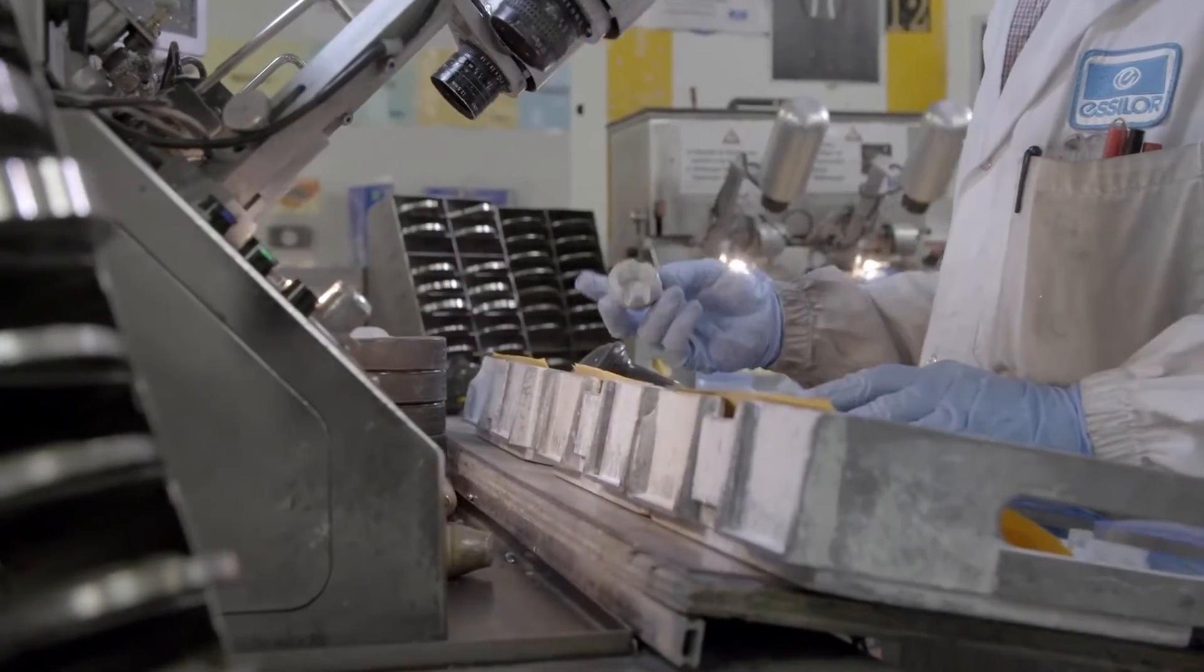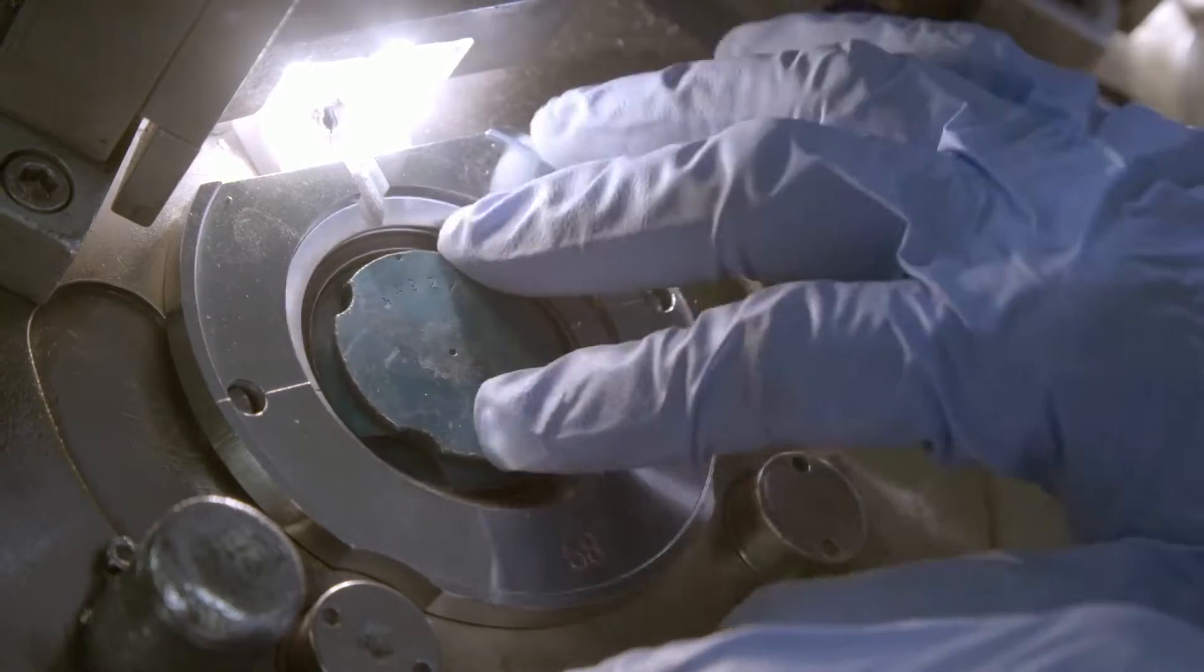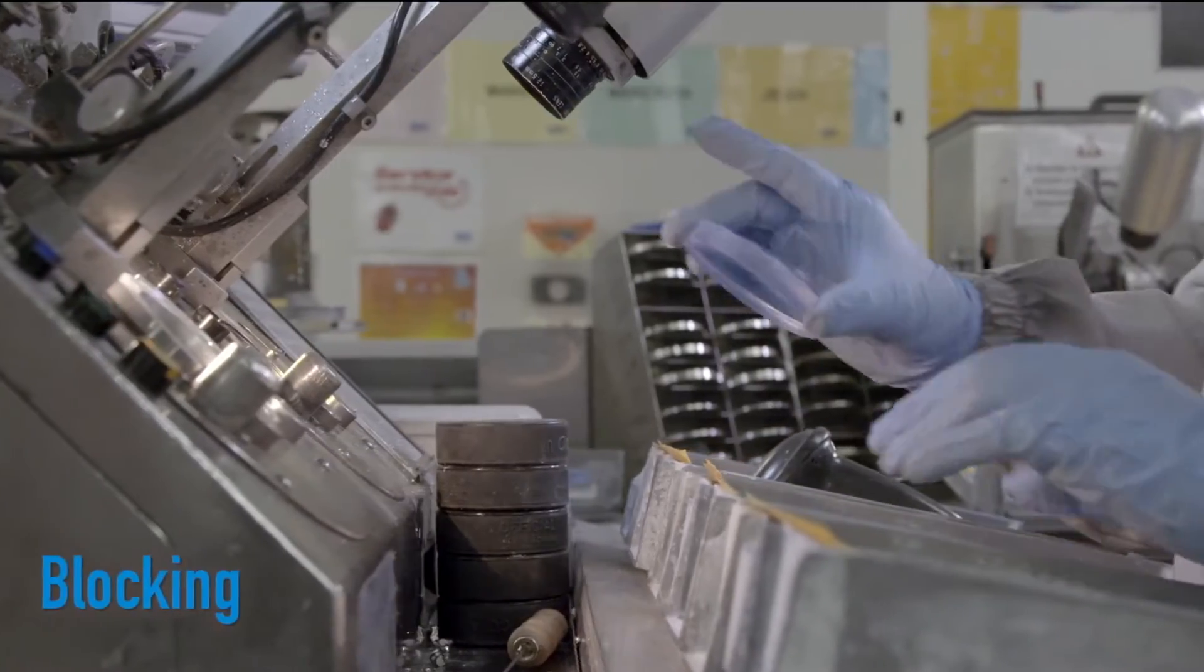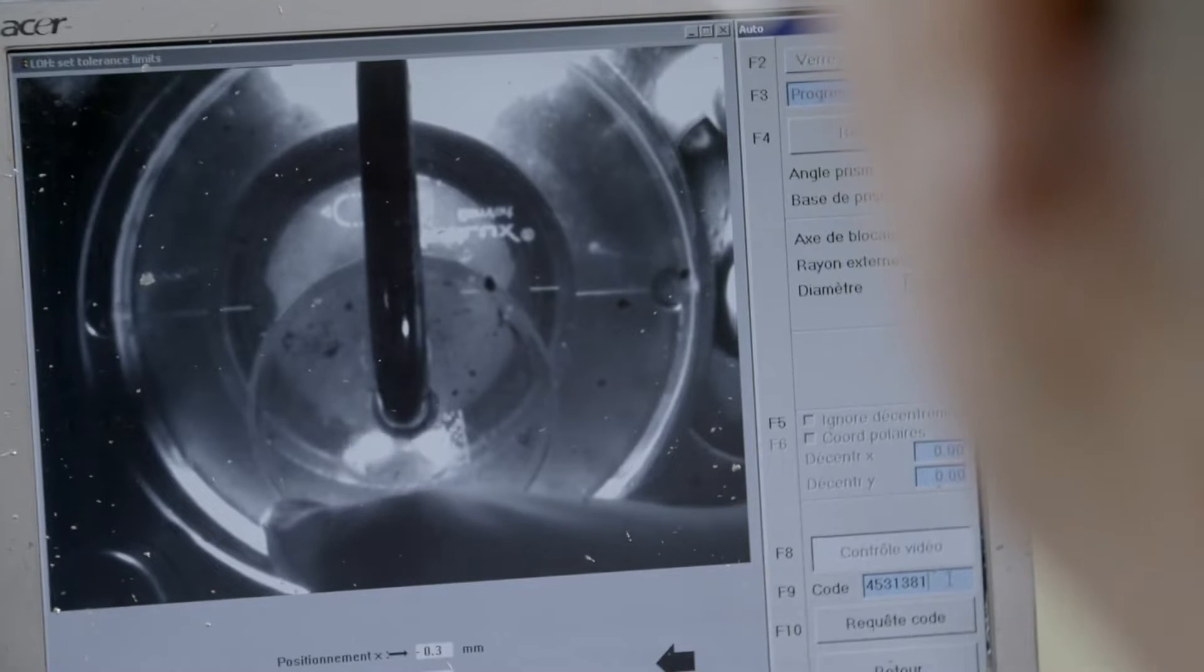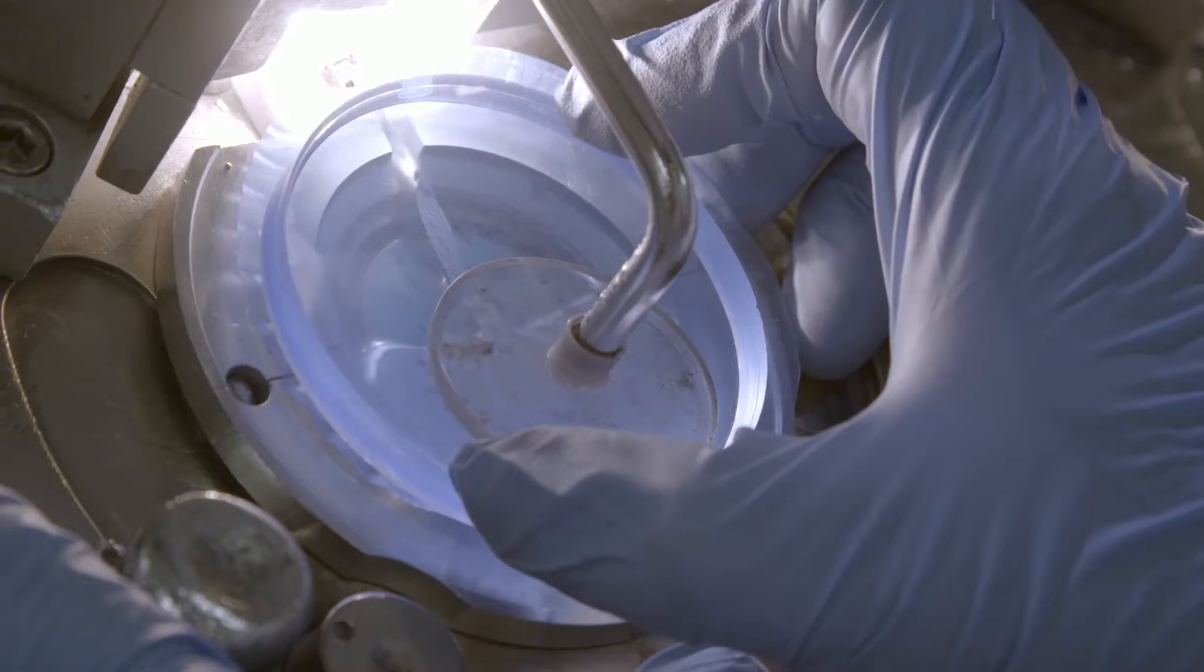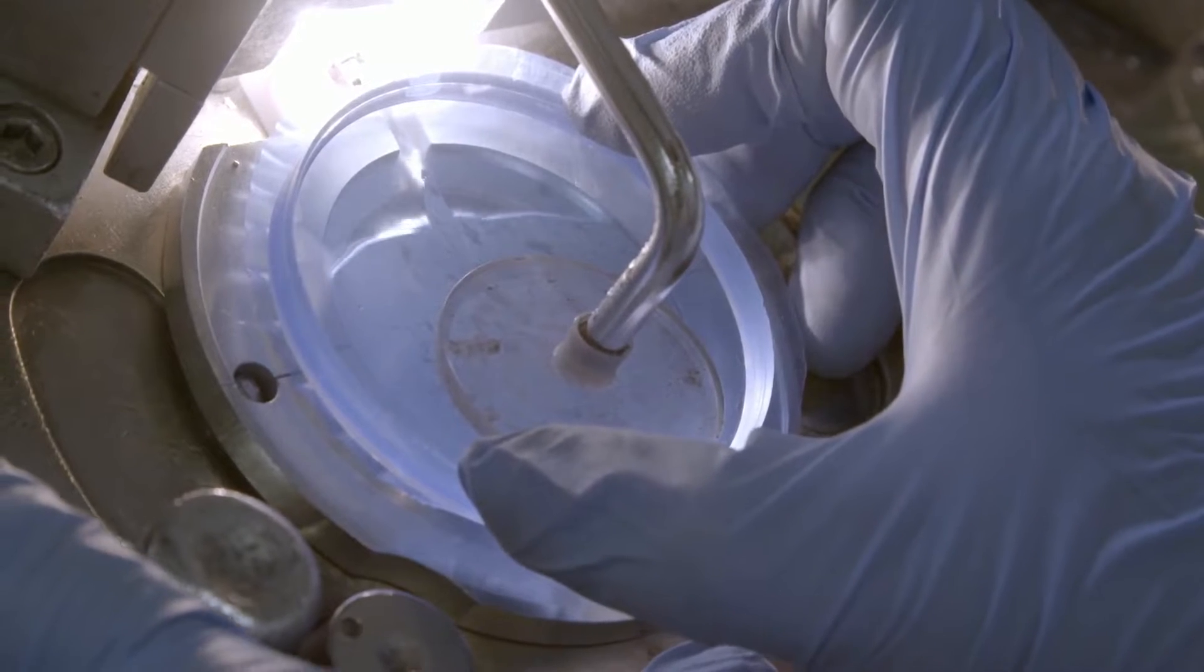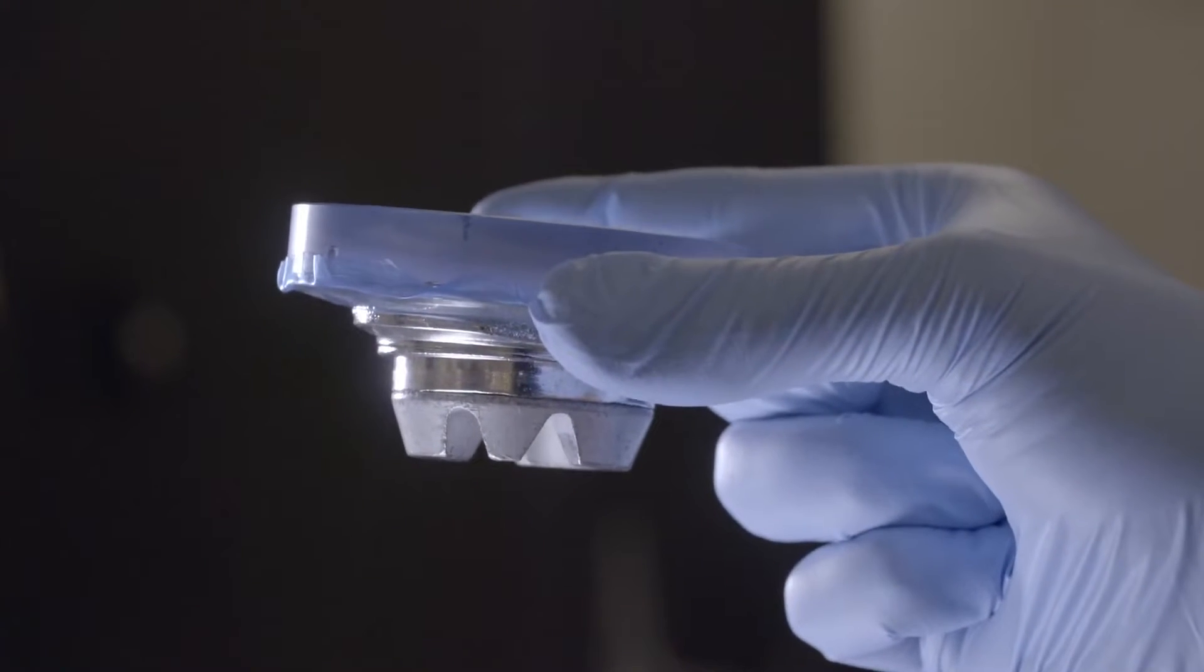An insert and a ring are positioned in the blocker. The protected surface of the lens is precisely put in position. Then, a liquid alloy is poured between the insert and the lens in order to attach them together. This now makes the lenses able to be handled by automated machines.